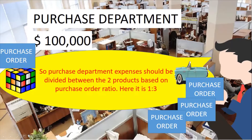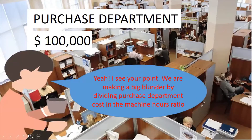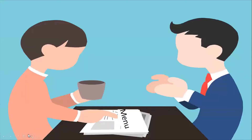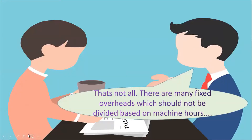Here it is 1 to 3. We are making a big blunder by dividing the purchase department cost in the machine hours ratio. There are many fixed overheads which should not be divided based on machine hours. The more logical method for dividing the purchase department cost between two products is the number of purchase orders, not the labor hours or machine hours used under absorption costing. Now let's take a look at other fixed overheads and the more logical method of dividing them.